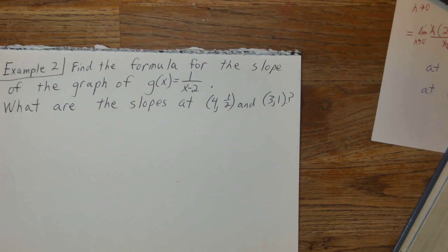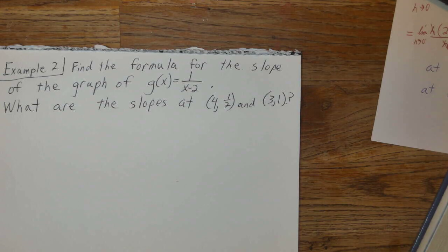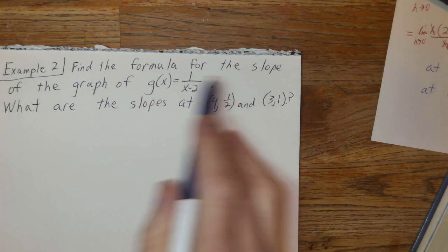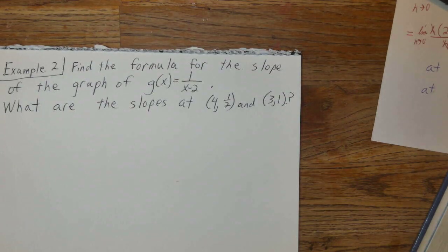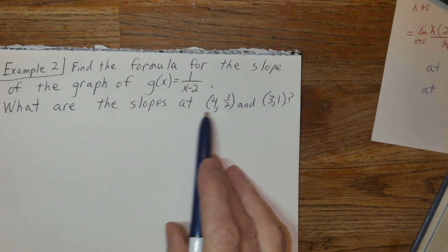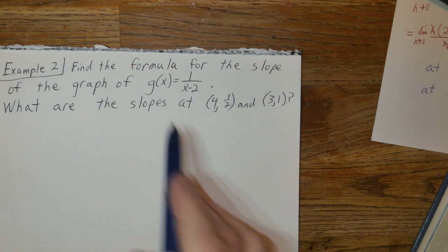Hi everyone. Get example 2 going here. Find the formula for the slope of the graph of g(x) = 1/(x-2). What are the slopes at (4, 1/2) and (3, 1)?